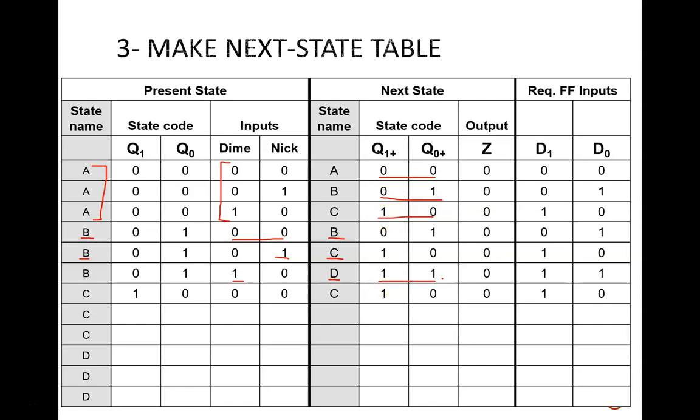This output Z column should only be high when leaving state D. So, right now, all you see are zeros. Finally, the required flip-flop inputs are simple for this design because we are using D flip-flops. According to the transition table, the next state values will be whatever the present flip-flop instructions are. So, these columns end up being identical. D1 matches Q1+, and D0 matches Q0+. Now, you should be able to complete the table. Pause the video while you do.